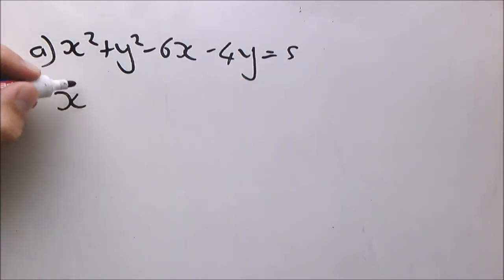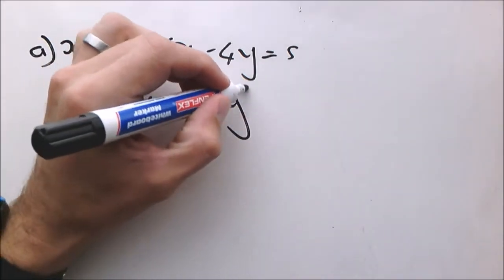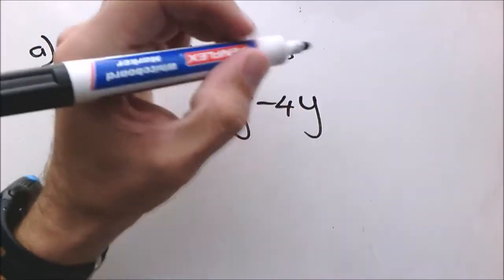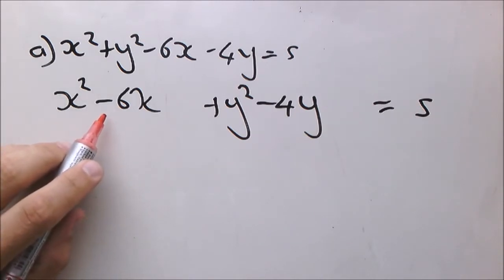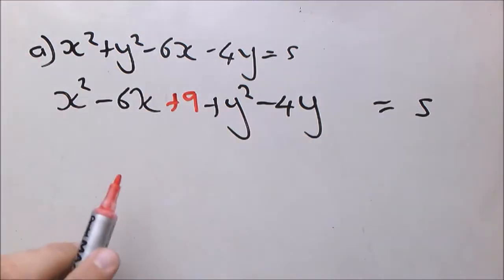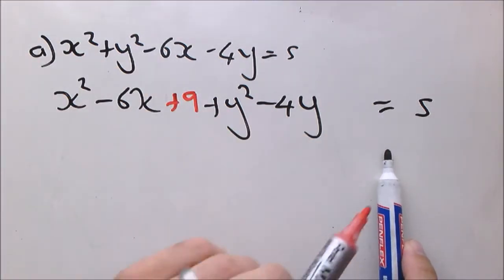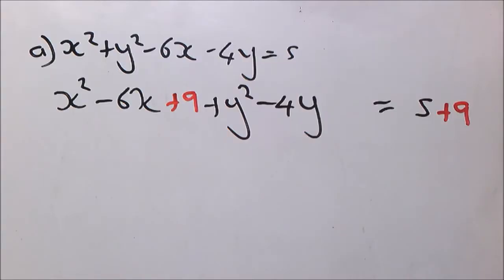First of all, write it out, expand it a little bit to create space for yourself. By completing the square, we know with x this b is negative 6, b over 2 is negative 3, negative 3 squared is plus 9, and there's the equal to sign. So therefore we have to add 9 on the other side.